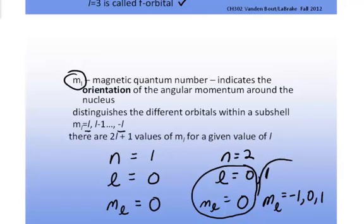What that means is for this value of L, where L equals 1, which is also called the p orbital, it could have three different orientations labeled with the M sub L quantum number of negative 1, 0, and 1.